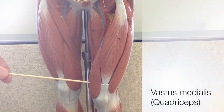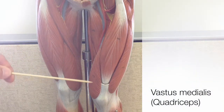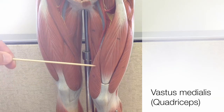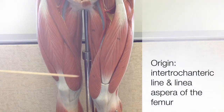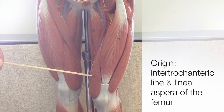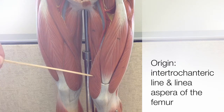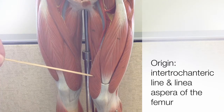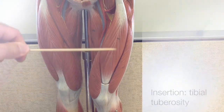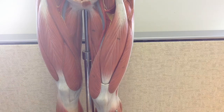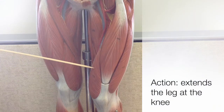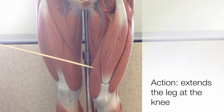Our second quadricep muscle is the vastus medialis, located on the medial side of the anterior thigh. Unlike the rectus femoris, the vastus medialis has its origins on the femur — on the intertrochanteric line, which is the region between the greater and lesser trochanters, as well as the linea aspera of the posterior femur. Like the rectus femoris, the vastus medialis inserts onto the tibial tuberosity. It plays no role in leg flexion because it has no origins on the coxal bone; instead, it just extends the leg at the knee.